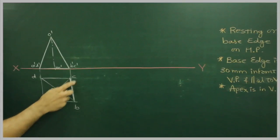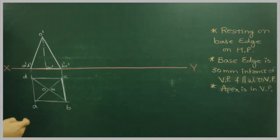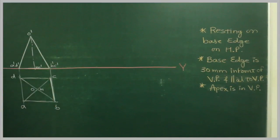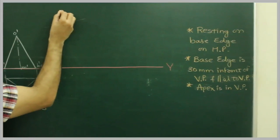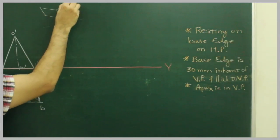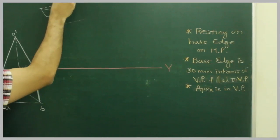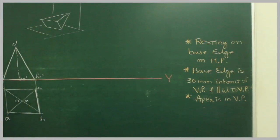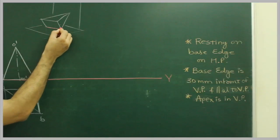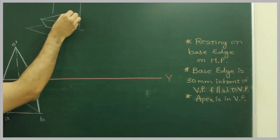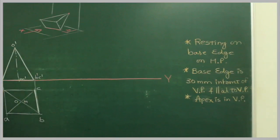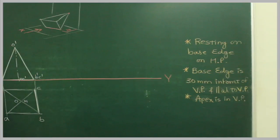They haven't given anything about the middle stage. So what we will do - this is what we are talking about, that this is the edge which is 30 mm in front of VP and apex is in VP. You are watching from here, the observer is seeing from this direction. Now this is my last stage, the final stage.